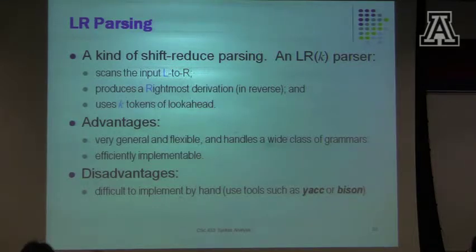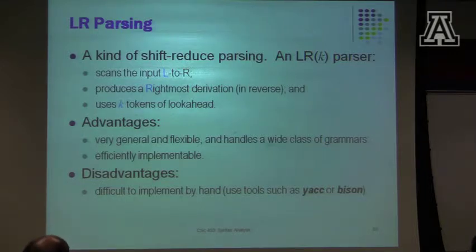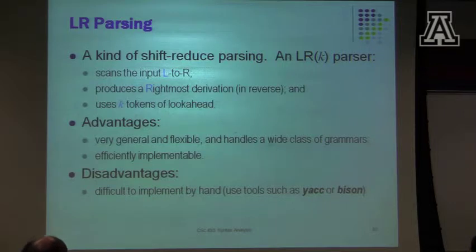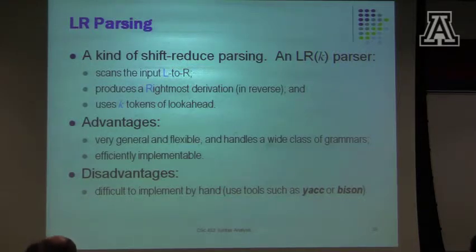The reason we're studying LRK parsers is that this parsing model is very general and flexible — it handles a very wide class of grammars. The implementation of the parser is pretty efficient because the logic of the parsing code is very simple: it sits in a loop and does a bunch of shifts and reduces. A potential disadvantage is that implementing an LRK parser by hand is a royal pain. Of course, if you get a tool like YAC to do it for you, that's fine.